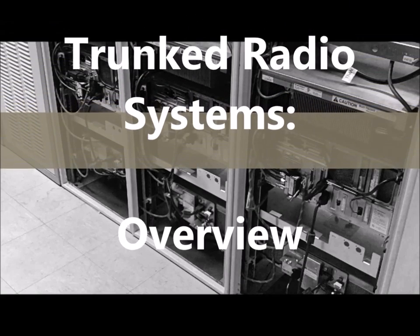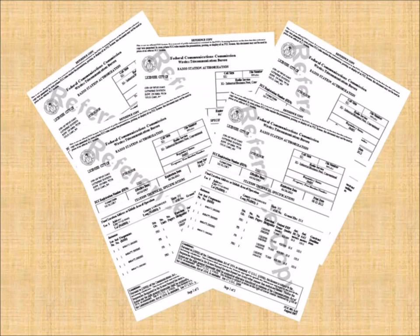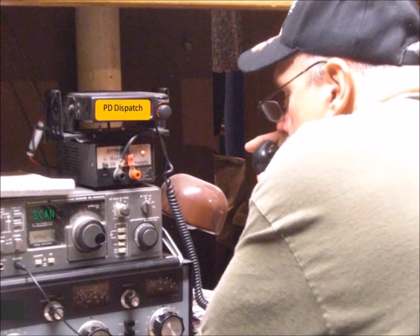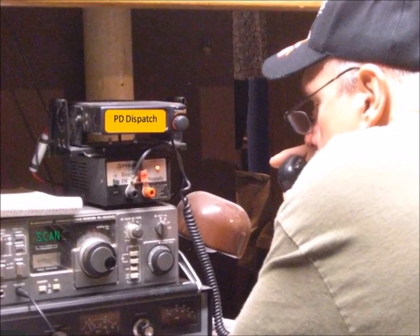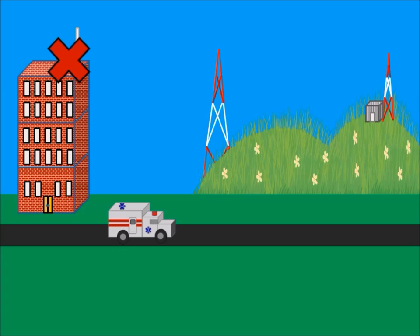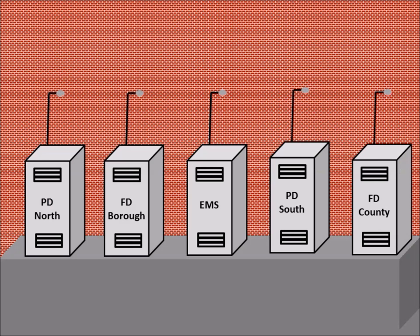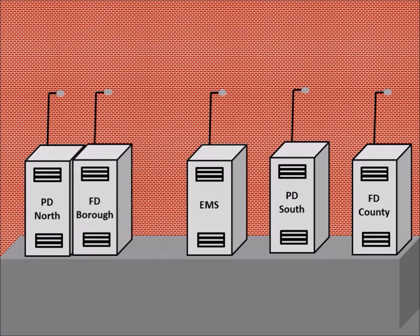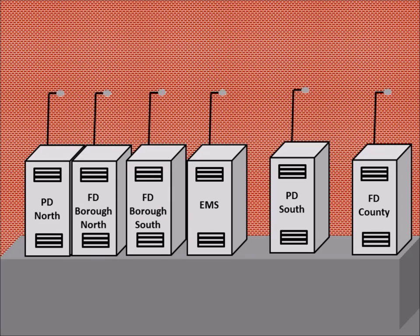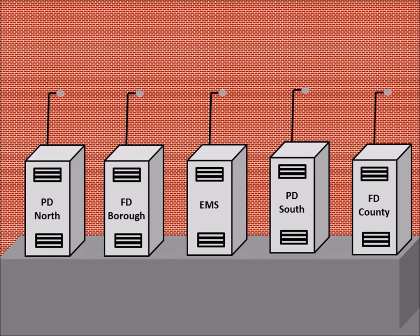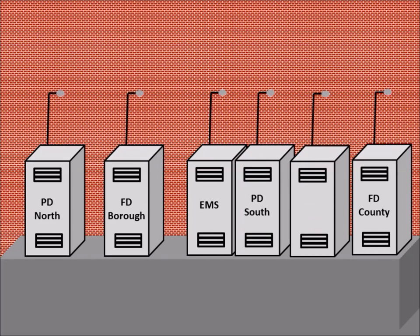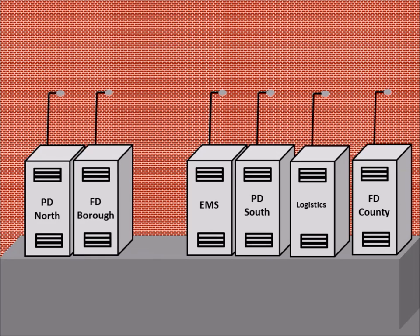Trunked Radio Systems Overview. If you have a group of frequencies available and are having trouble obtaining additional frequencies, or are interested in maintaining access control and preventing unauthorized access, or want automatic redundancy in case of a base station failure, then a trunked radio system may provide the most efficient service. For example, with five conventional channels — PD North, Fire Burrow, EMS, PD South, and Countywide Fire — you may want to split Fire Burrows into a North and South configuration but have no additional frequencies, or need a channel for a special event.